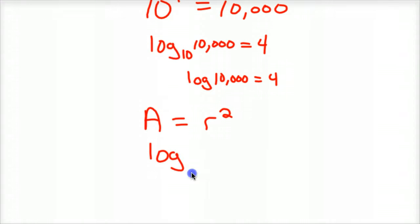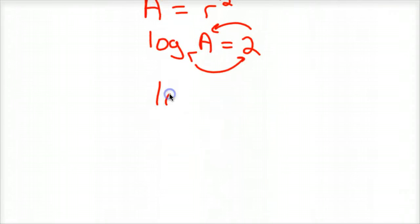Log base R of A equals 2. So it's a little trickier. I've got it kind of out of order, but R to the 2nd power equals A. There's your logarithm. So log base R of A equals 2.